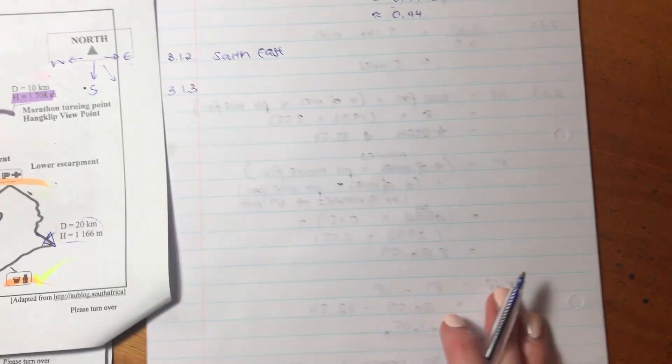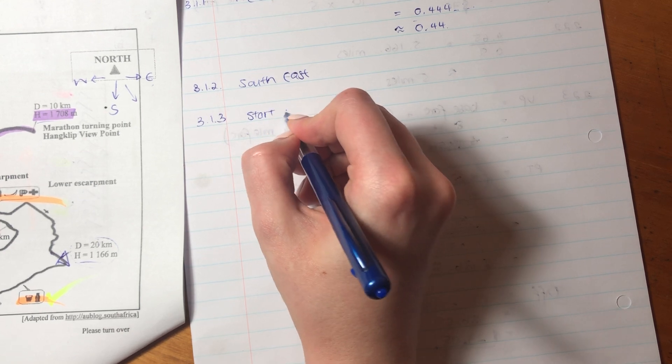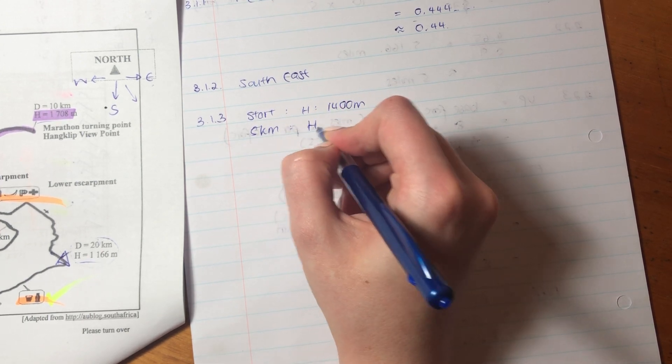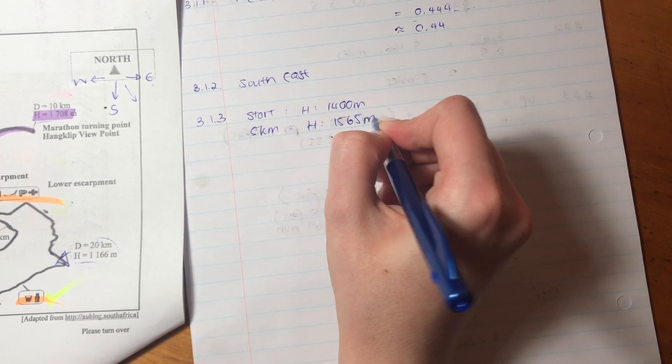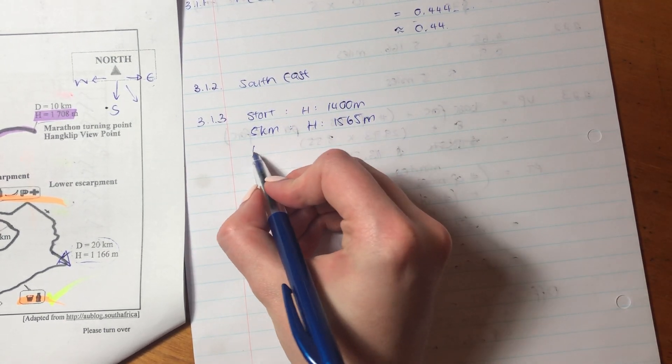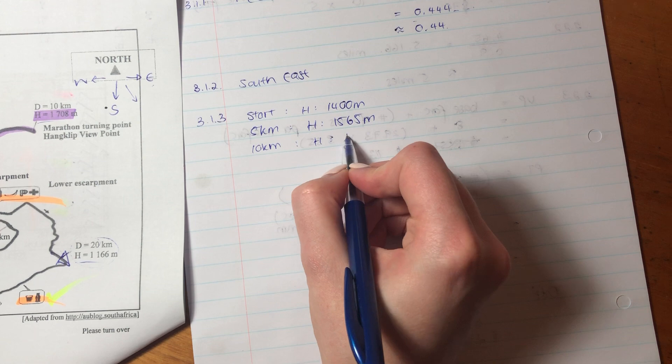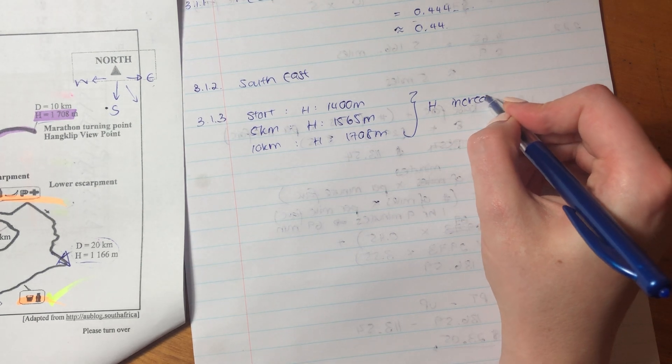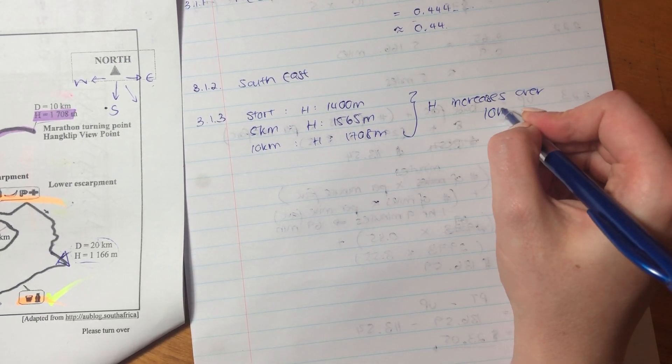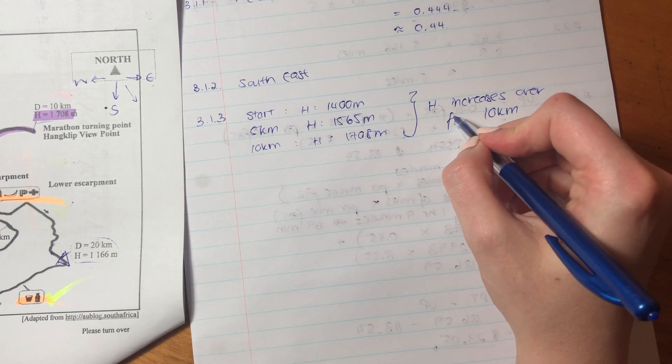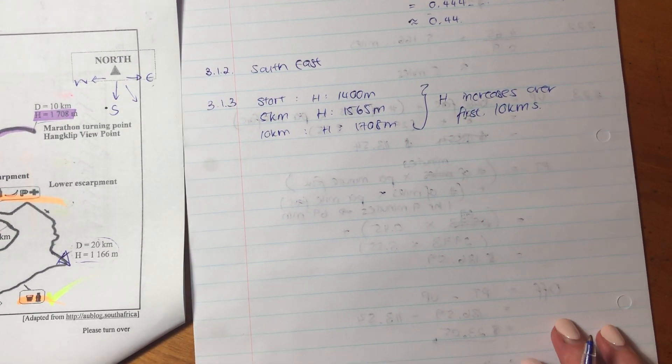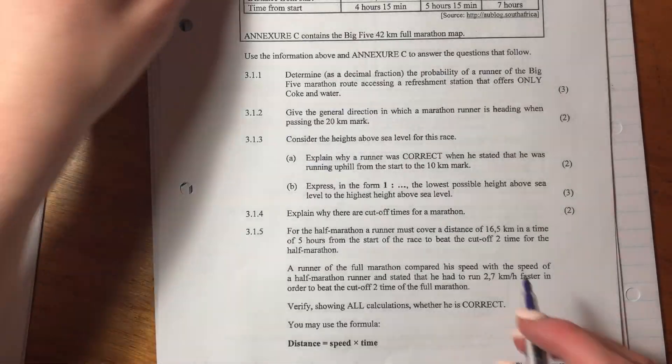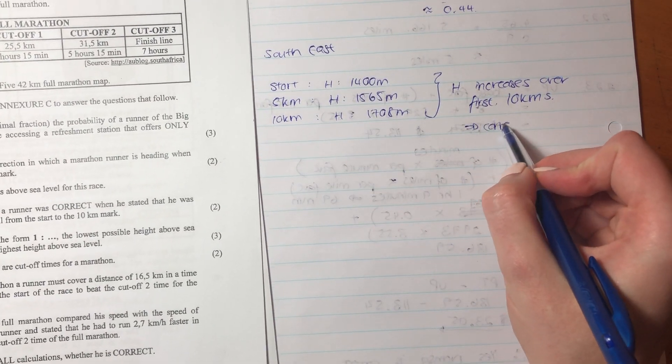So yes, he is correct, and we can say here, you can literally say, start, he starts at a height of 1,400 meters. At five kilometers, it's a height of 1,565. And then at 10 kilometers, it is 1,708. So you can say height increases over first 10 kilometers. So that's how we know, because it basically said, explain why he said that. Is he correct? And then we'll say, yes, he is correct.